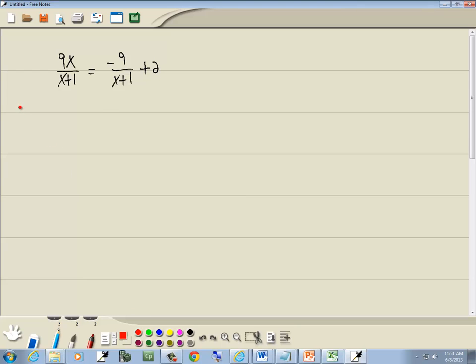First step is to get rid of parentheses, don't have any. Second step, get rid of fractions. Multiply everything by the LCM of all your denominators. I've got x plus 1 and x plus 1, so they're the same. So basically we only have one denominator, a unique denominator.